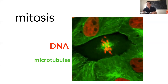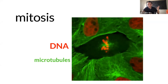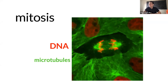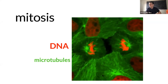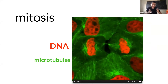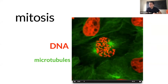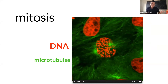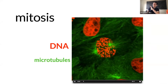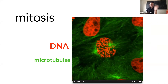Mitosis — maybe the last time you thought about this word was in grade school when you had to memorize all the different phases like anaphase and prometaphase. This movie is probably the reminder you needed. It shows an actual cell undergoing cell division, which is what mitosis is. The key part is that copies of DNA are made.